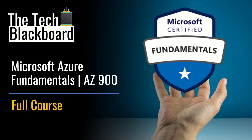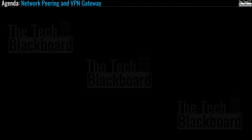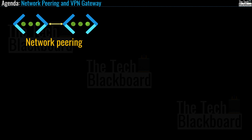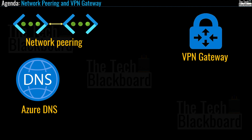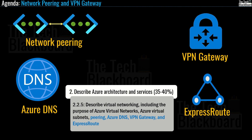Hello and welcome back to the Tech Blackboard. Welcome to our free learning series on Azure Fundamentals. In this video we will talk about Azure Network Pairing and Azure VPN Gateway, and in the subsequent episode we will cover Azure DNS and Azure ExpressRoute. This is section 2.2.5, a subset of section 2, which holds 35 to 40% of the AZ-900 exam. You can download the free PDF file — link is in the description box.